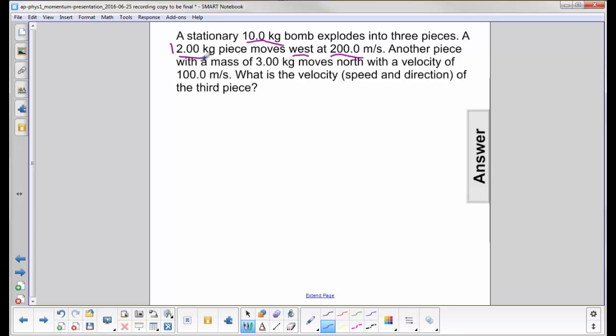Another piece, mass two, moves north in the positive direction with a velocity of 100 meters per second and it has a mass of three kilograms. We want to find the velocity, the speed and direction of the third piece.